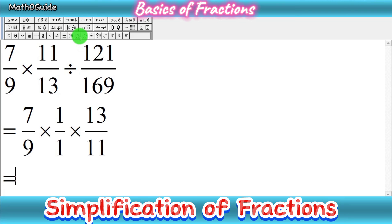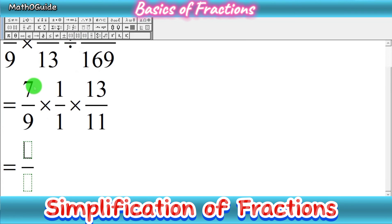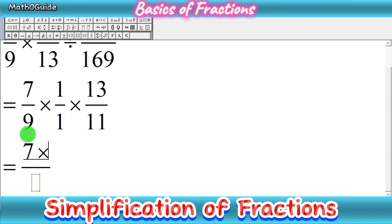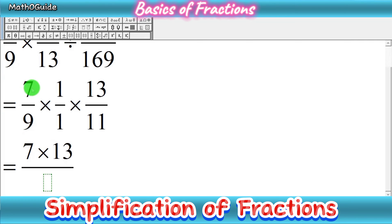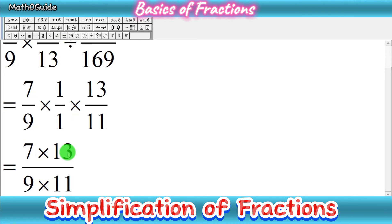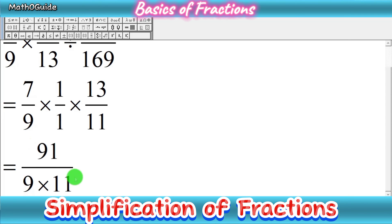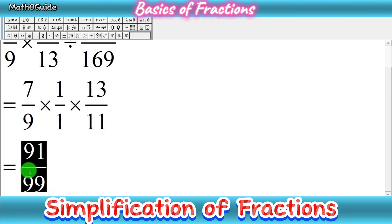We write the new fraction and simply multiply all the numerators and all the denominators. We have three numerators: 7, 1, and 13. There is no need to write 1 as a factor since multiplying by 1 gives the same answer. So we multiply 7 and 13 in the numerator, and 9 and 11 in the denominator. 7 times 13 gives 91, and 9 times 11 gives 99. So 91 over 99 is our simplified answer.